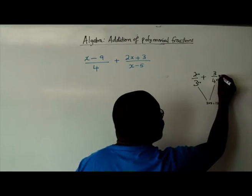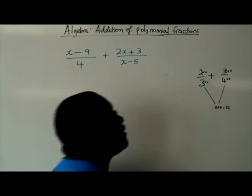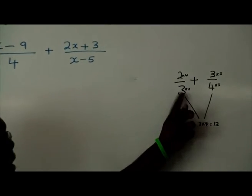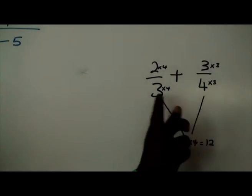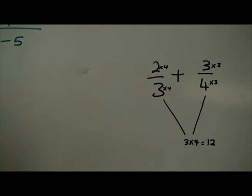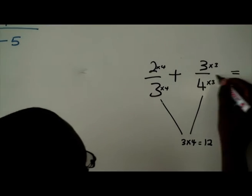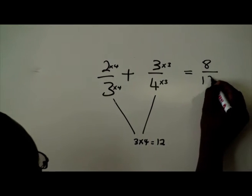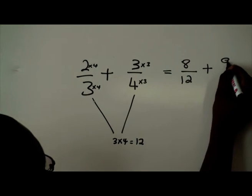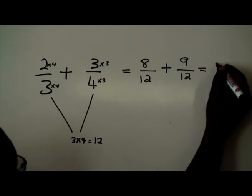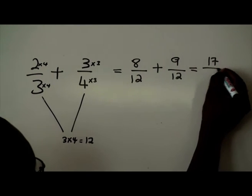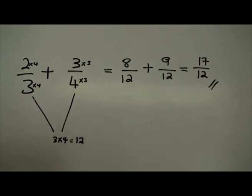The reason why I multiplied by 4 here is that I want 12. And I want 12 on both denominators. This is going to simplify as 8 over 12 plus 9 over 12, which if we leave it as an improper fraction, it will be 17 out of 12.